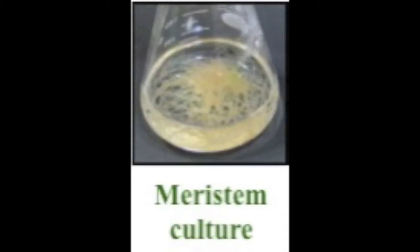Stem culture — isolated primary or secondary shoot meristems can be cultured in vitro, producing clumps of shoots from either axillary or adventitious buds. This is used for clonal propagation and for the production of virus-free plants.